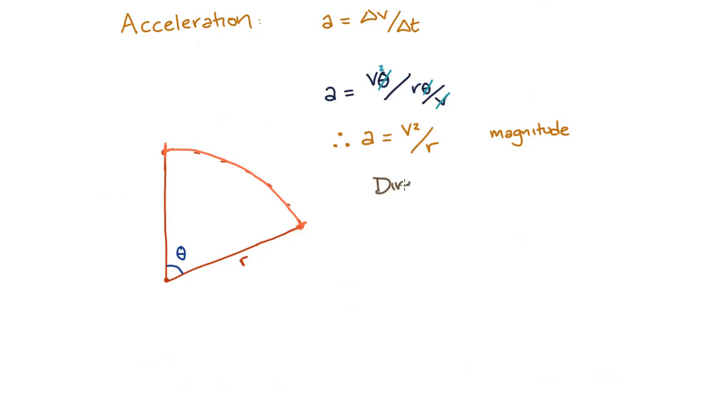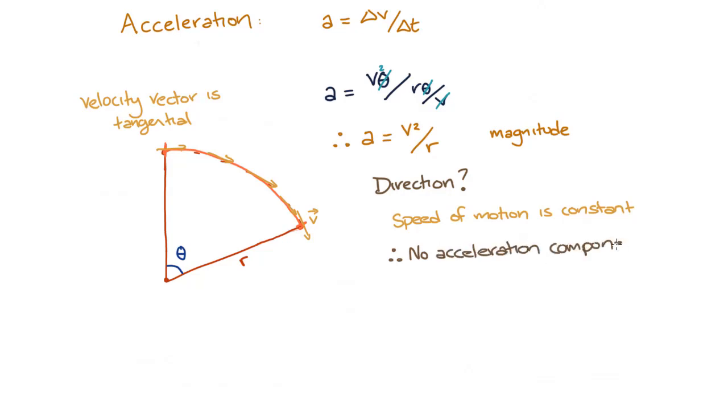But we know that acceleration is a vector, so what about the direction? Well, the key fact to remember here is that the speed is constant. Now this means that there can't be any component of acceleration that is in the same direction as the velocity, otherwise the speed would change. We know from our previous velocity derivation that the velocity always points tangentially to the circle. This must mean that all of the acceleration must be perpendicular to the tangent, which is in the radial direction.